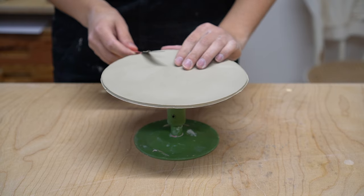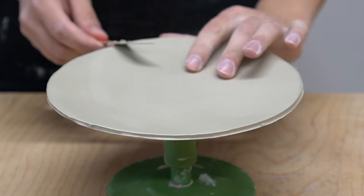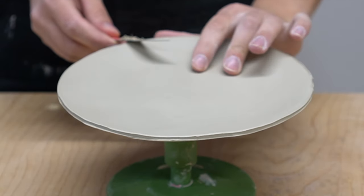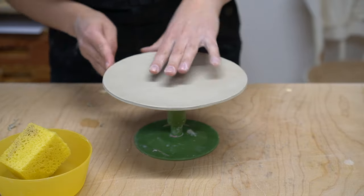And then I'm not sure how well you can see but the edges are a little bit sharp so I'm using my knife to sort of shave off the corner to make it a little bit more soft. And then smoothing with a sponge.